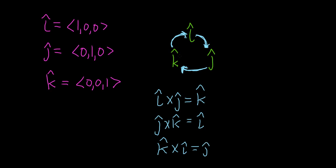So again, let me use a different color just for emphasis. So if we go from i to j, we get k. If we go from j to k, we get i. And if we go from k to i, we get the next one which is j.